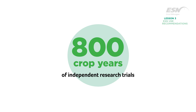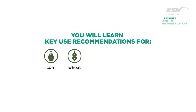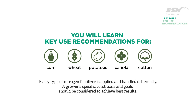Use recommendations for ESN have been developed from over 800 crop years of independent research trials and are based on optimal growing conditions. In this lesson you will learn the key use recommendations for corn, spring and winter wheat, potatoes, canola, and cotton. Every type of nitrogen fertilizer is applied and handled differently; a grower's specific conditions and goals should be considered to achieve best results.